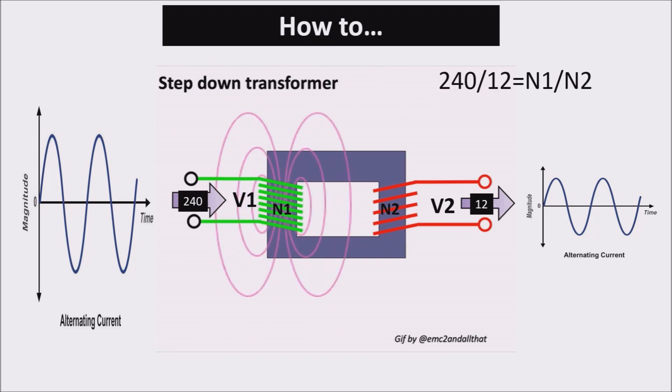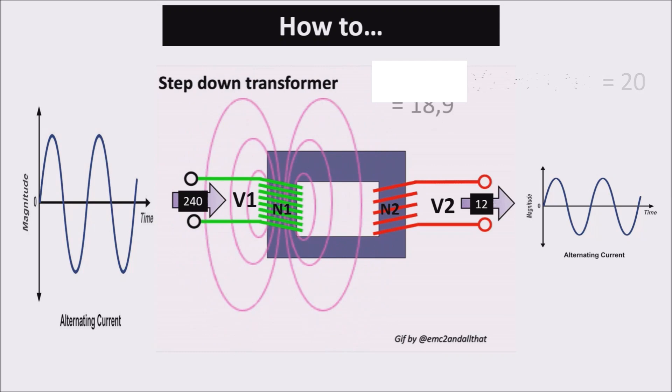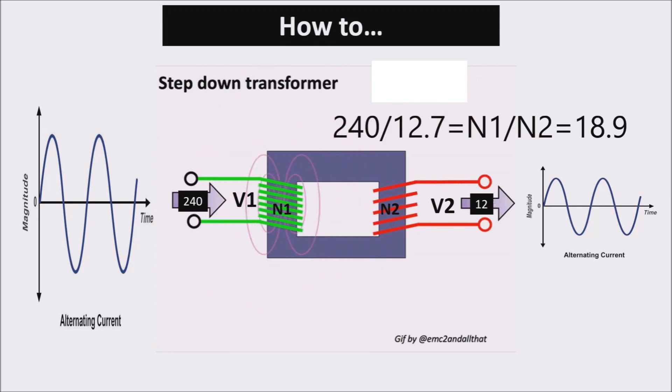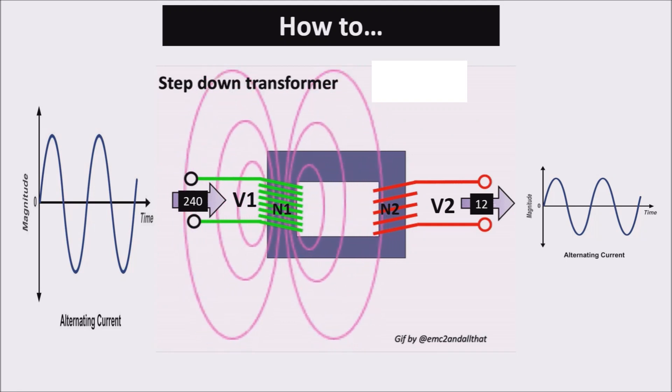Being V1 240 volts and wanting V2 as 12 volts, we need a turn ratio of 20. Actually 12 is the final value we want to obtain, but at this level we need some more volts, more or less 12.7 volts. We see why later. If you want to go deeper on transformers, I leave you a link in the description.